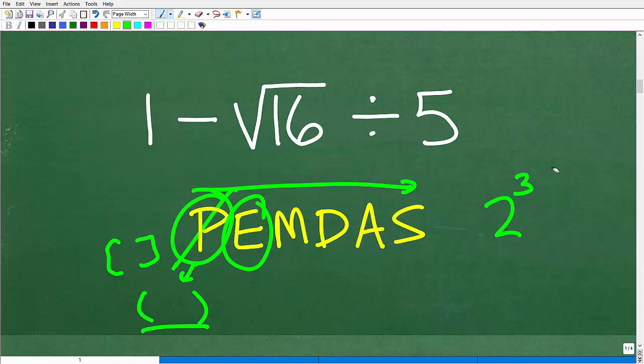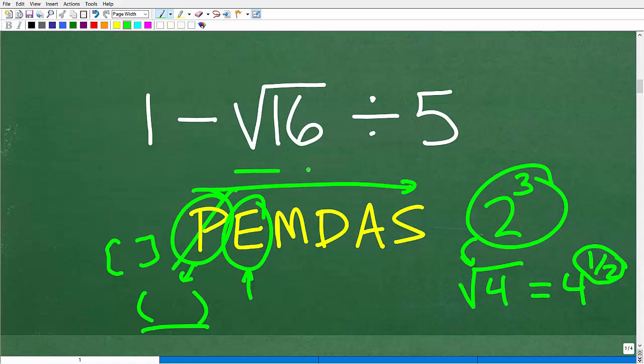Now one thing that you may not be aware of is that you can think of square roots as an exponent as well. The square root of 4 is equivalent to 4 to the 1 half power. So here, it's not just powers, you can also be thinking about square roots. This is going to come in handy because obviously we have a square root in our problem. That's what E stands for.